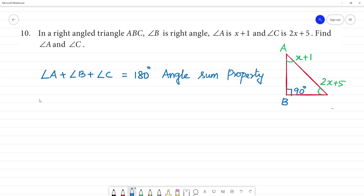Angle A is x plus 1 plus angle B is 90 degree plus angle C is 2x plus 5. That is equal to 180 degree.